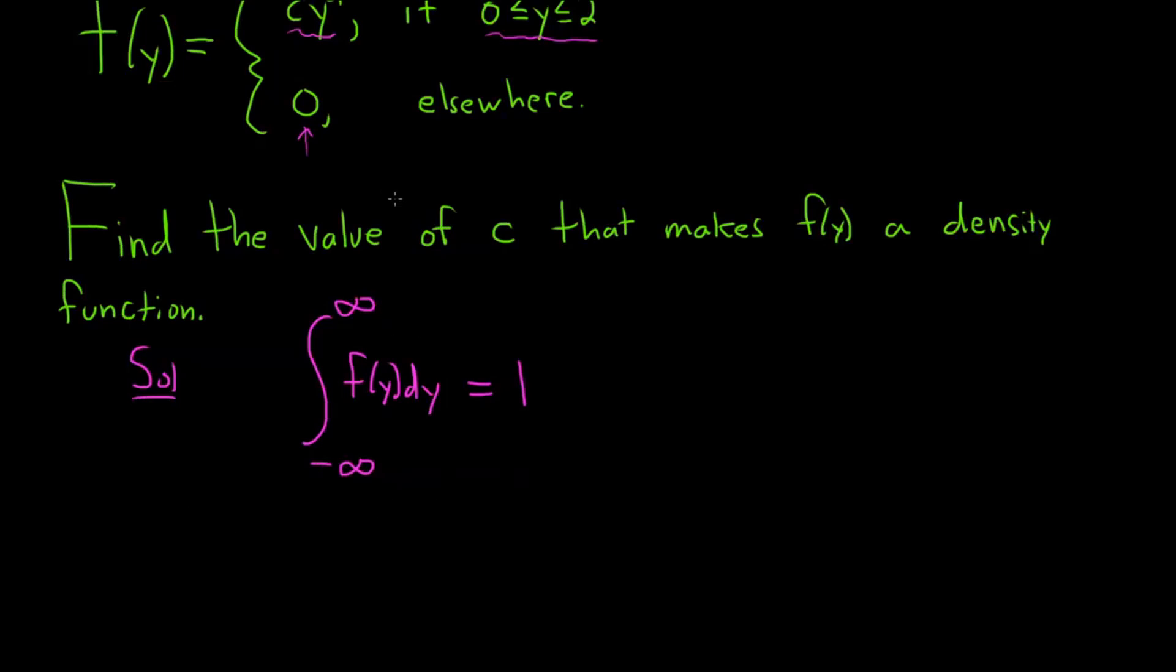So whenever it's not between 0 and 2, this integral, let's just break it up. Let me just show you. From negative infinity to 0, it's going to be 0 dy. And then we'll go from 0 to 2. In that case, it's going to be cy squared dy. And then from 2 to infinity, it's 0 dy.